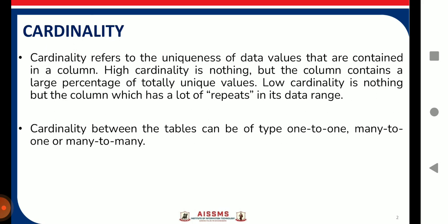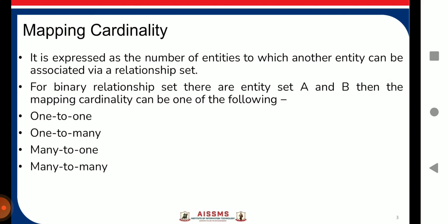Cardinality between tables is mapped using one-to-one, one-to-many, many-to-one, and many-to-many. Mapping cardinality or cardinality ratio means to denote the number of entities to which another entity can be linked through a certain relationship set. It is most useful in describing binary relationship sets, though it can also apply to sets containing more than two entity sets. For a binary relationship set with entity sets A and B, the mapping cardinality can be one-to-one, one-to-many, many-to-one, or many-to-many.